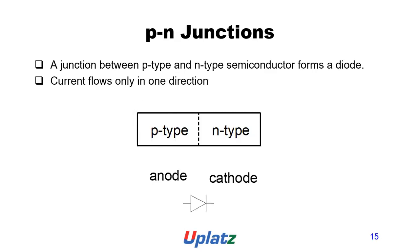The junction between P-type and N-type semiconductors forms a diode, where current flows only in one direction. The P-type acts as anode and N-type as cathode, and the symbol of the P-N junction diode is shown.